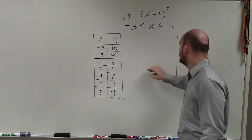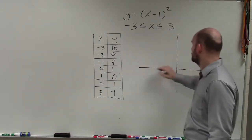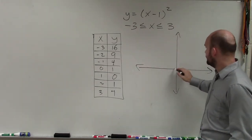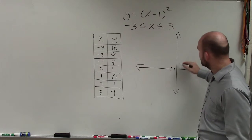So now, let's go and plot the points. And let's see what this looks like. X equals negative 3, y equals 16.